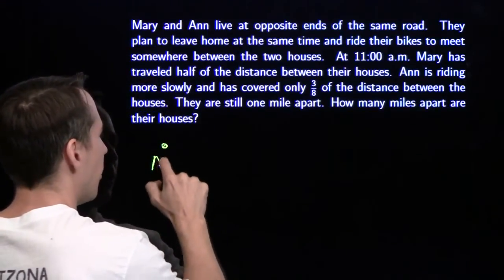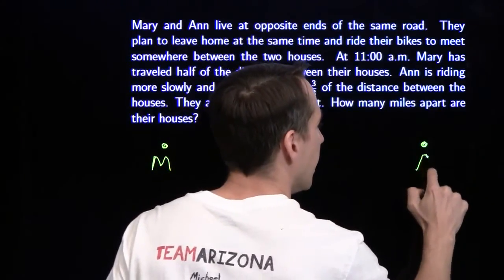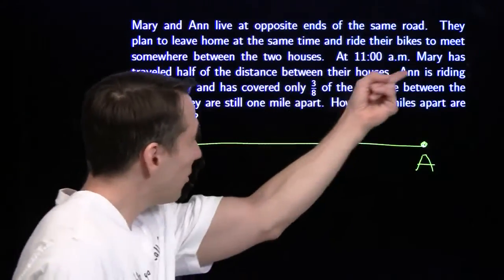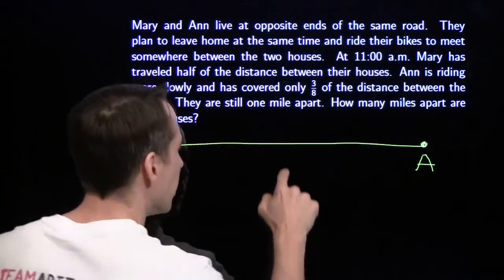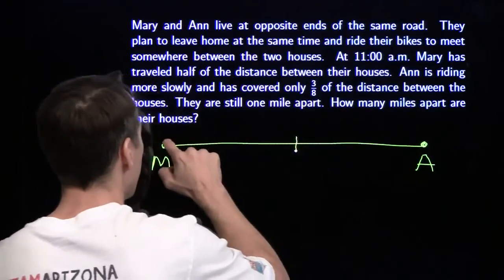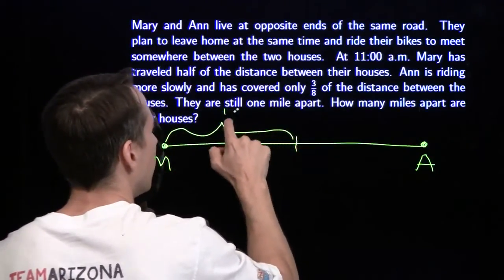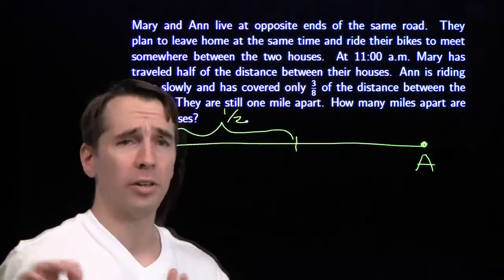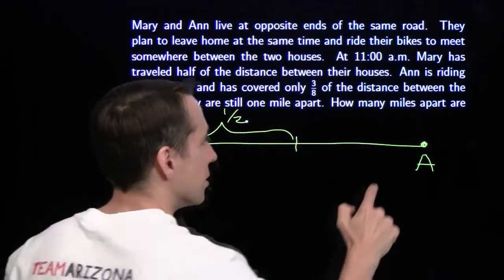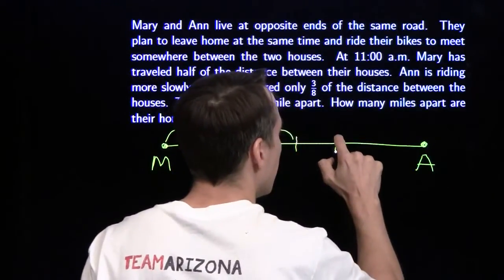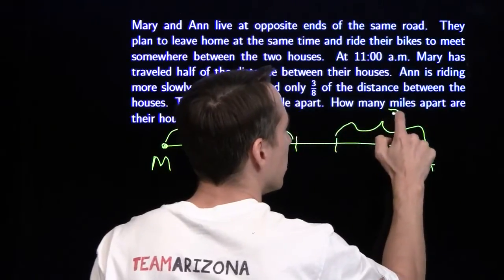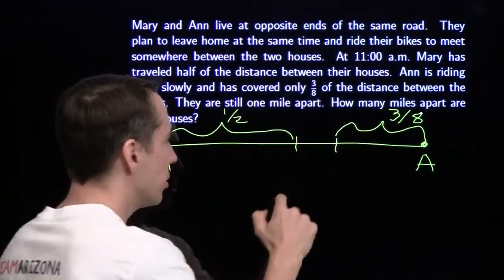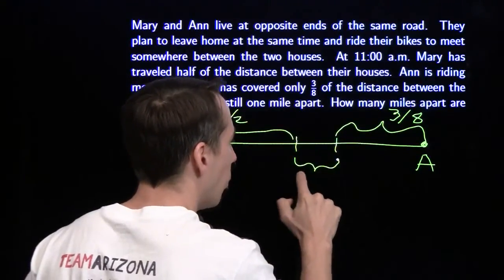So here's our picture. Mary's at one end, Ann is at the other. They're going to ride and meet in the middle. At 11 a.m., Mary has traveled half the distance between their houses, so at 11 a.m. Mary is right there halfway. Now, Ann's coming the other way. She's going a little bit slower — she's covered only three-eighths of the distance. She's come this way and she's not quite to the middle yet. And they're one mile apart, so these two points here are one mile apart.